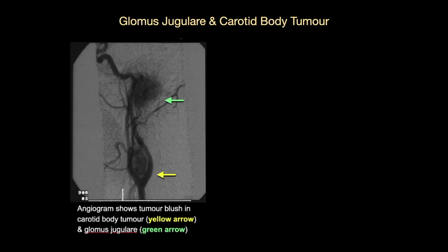As these tumours are highly vascular, they bleed excessively during surgery. To reduce bleeding, an angiogram is done before surgery to identify the blood vessel supplying the tumour and block it. This is known as embolization, and is performed by an experienced interventional radiologist.